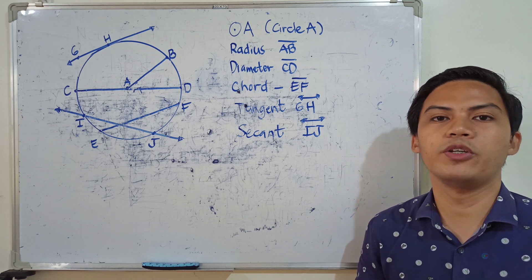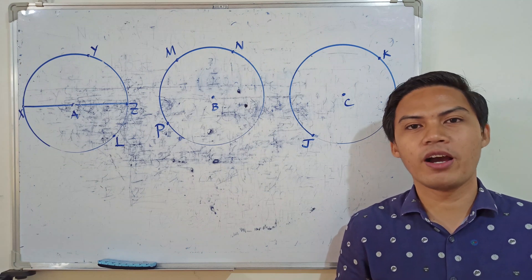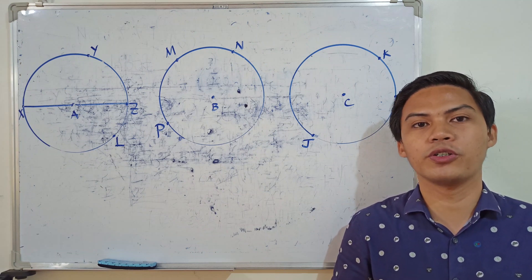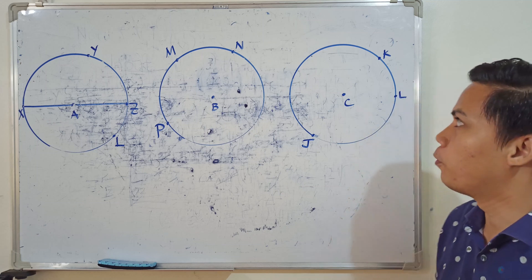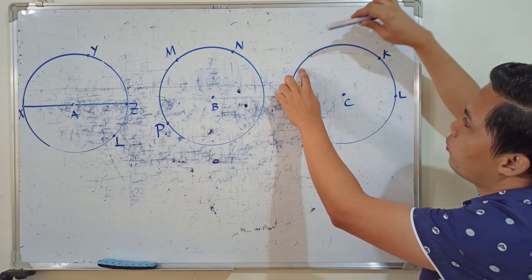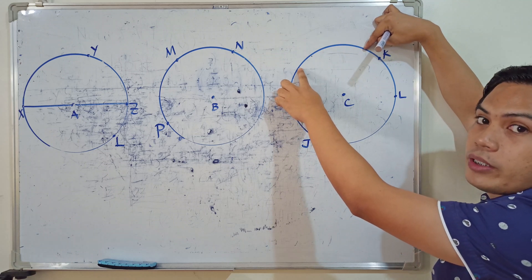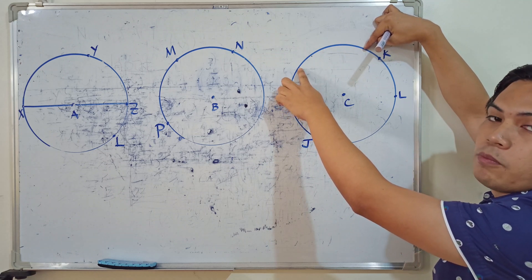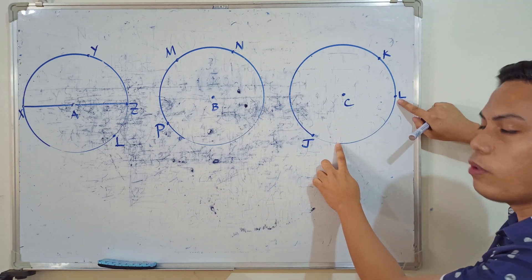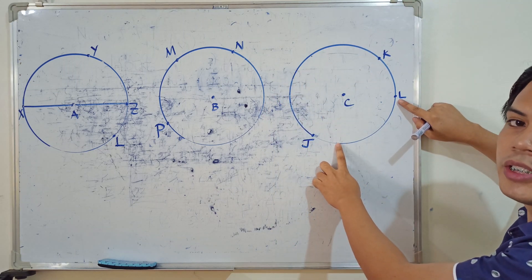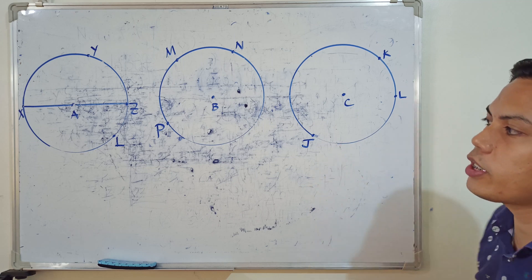Now, how about arcs? An arc is just a portion or a part of a circle. For example, from this point to this point is an arc — it is just a part of the circle. We are going to discuss three types of arcs.